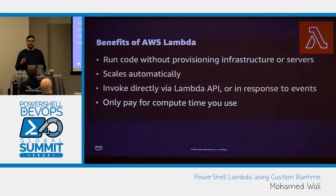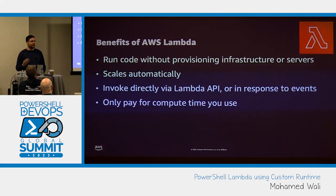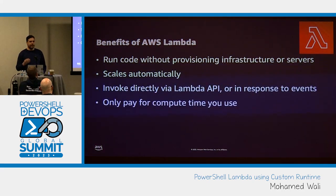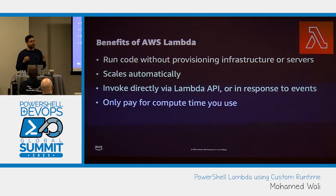Lambda can be invoked in different ways — either by invoking the function directly or by responding to certain events. What's really cool is that you only pay for the time you consume. If you have a server currently running PowerShell scripts a few times per day with the server up and running all day, you're paying a lot of money. Using AWS Lambda instead is going to save you a lot of money because you only pay for the compute time needed to execute your PowerShell script.